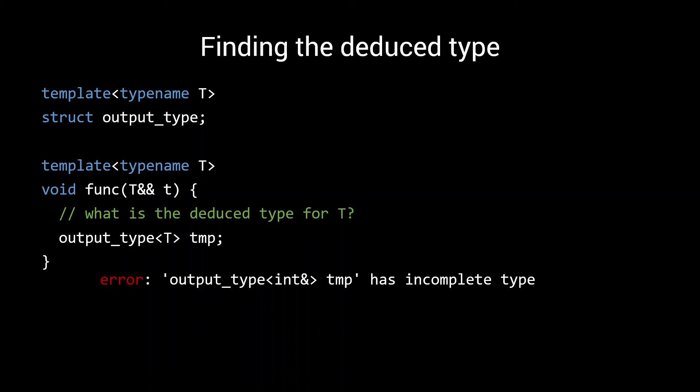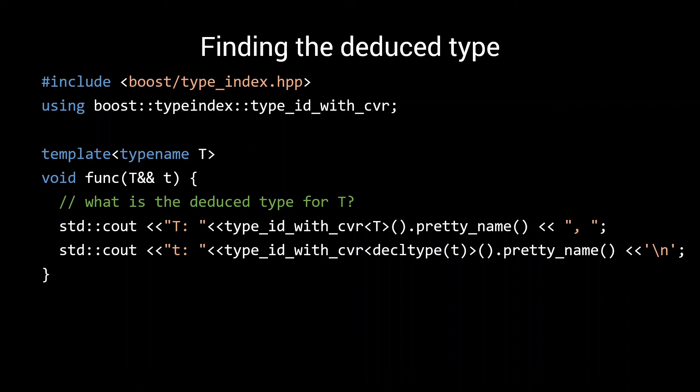But sometimes you need something extra. Maybe this function is called with different types, and you want to see all the types that were deduced. In that case, triggering a compilation error on the first instantiation doesn't really help you. A good solution is to use Boost's TypeIndex header to output the types at runtime. The TypeIndex header offers a TypeID with CVR template, which, unlike the built-in TypeID, retains const volatile and references, and as such accurately represents the type passed to it, regardless of its qualifiers. We can now simply call TypeID with CVR with our template parameter and request the pretty name to output the deduced type. By using decltype, we can even output the deduced parameter type next to the deduced type for T.